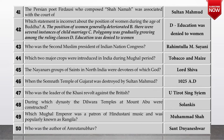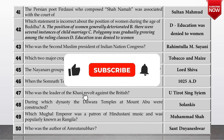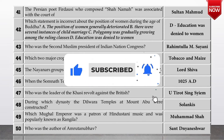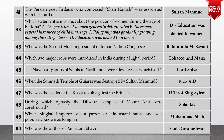Next question: which statement is incorrect about the position of women during the age of Buddha? The options are: A. The position of women generally deteriorated. B. There were several instances of child marriage. C. Polygamy was gradually growing among the ruling classes. And D. Education was denied to women. The correct answer is D — Education was denied to women.